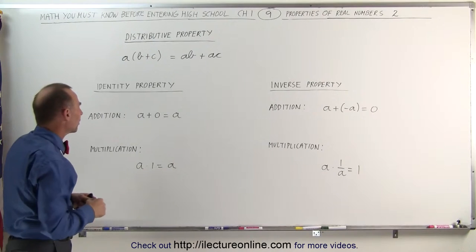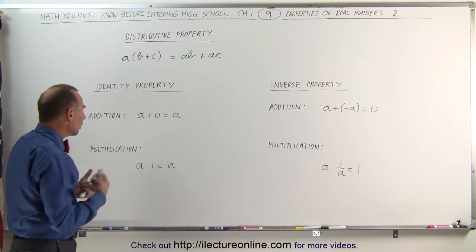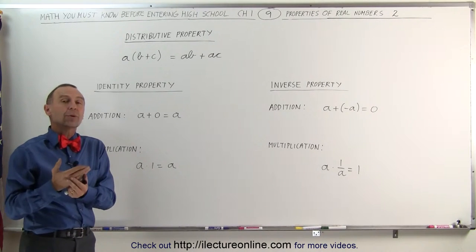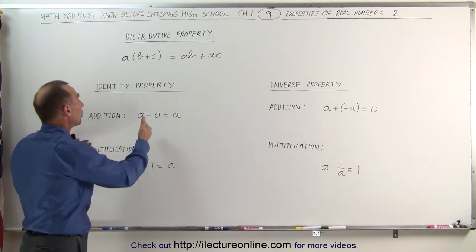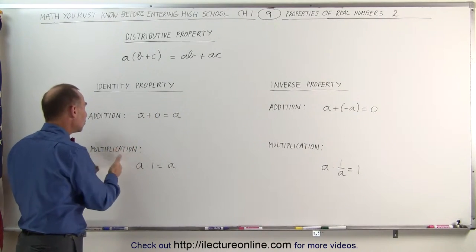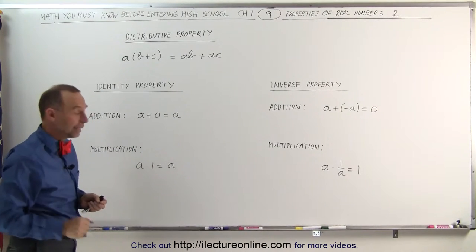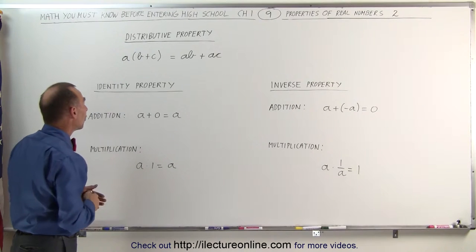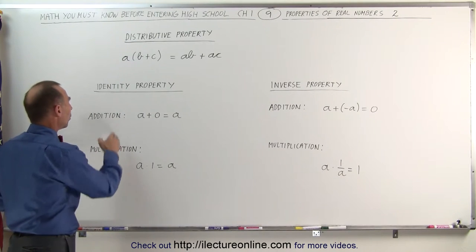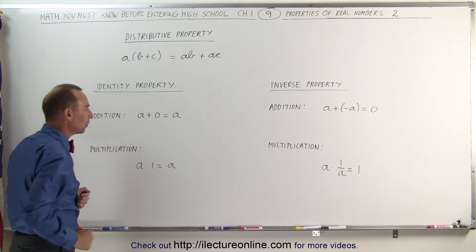That's called the identity property for addition. In multiplication, we can multiply a number times one and get the same number back. So in addition, we add zero. With multiplication, we multiply by one. a times one equals a. Those are the two cases of the identity property, one for addition and one for multiplication.